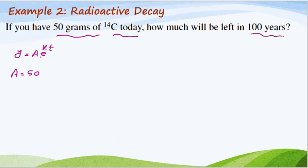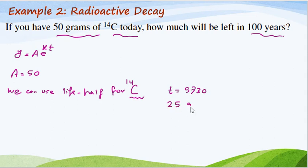Let's see, we can use half-life for carbon-14. We know that the half-life for carbon-14 is t = 5730 years to get 25 grams. Yes, half-life. This is information we can write here.